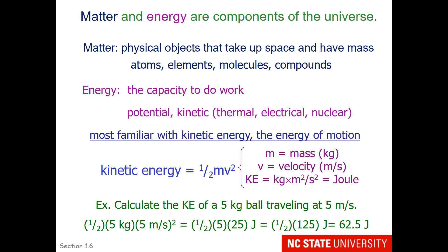To give you an idea of the relative scale of energy, imagine a five kilogram bowling ball rolling down a bowling lane at an average speed of five meters per second. The amount of energy that bowling ball has when it hits the pins is 62.5 joules. Nobody wants to be hit by a bowling ball, but that 62.5 joules pales in comparison to the energy available in chemicals and chemical bonds.